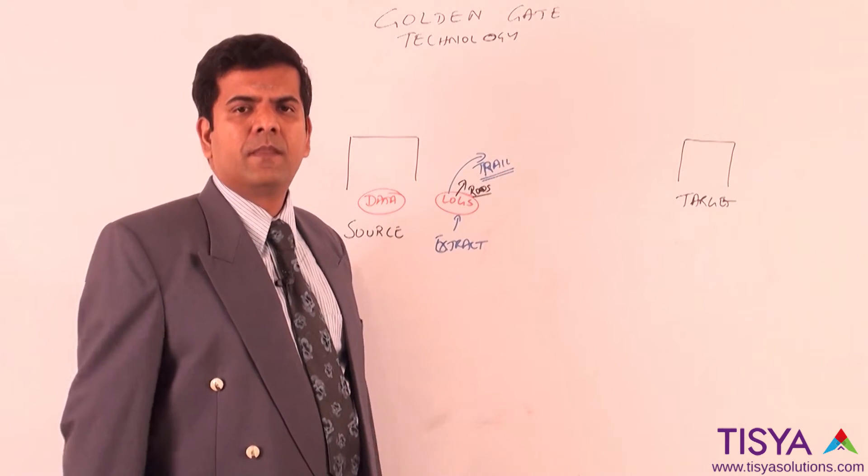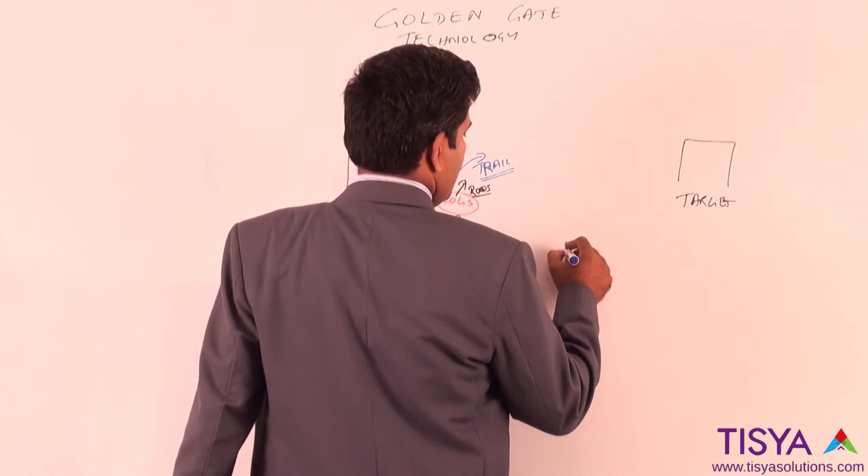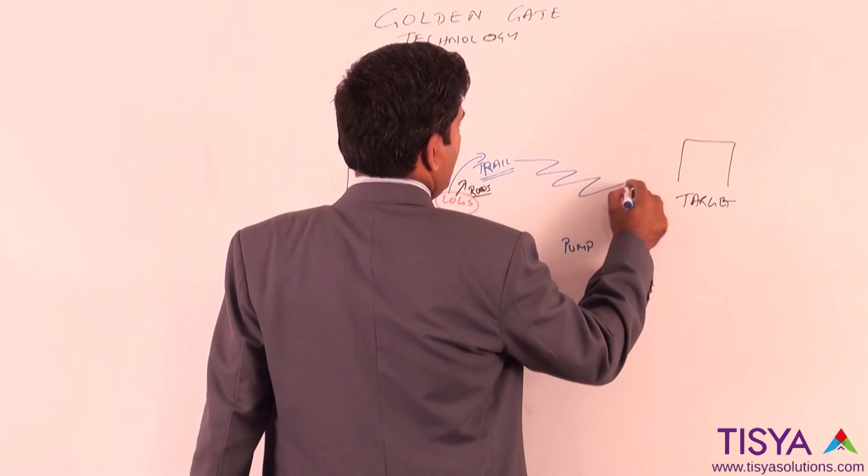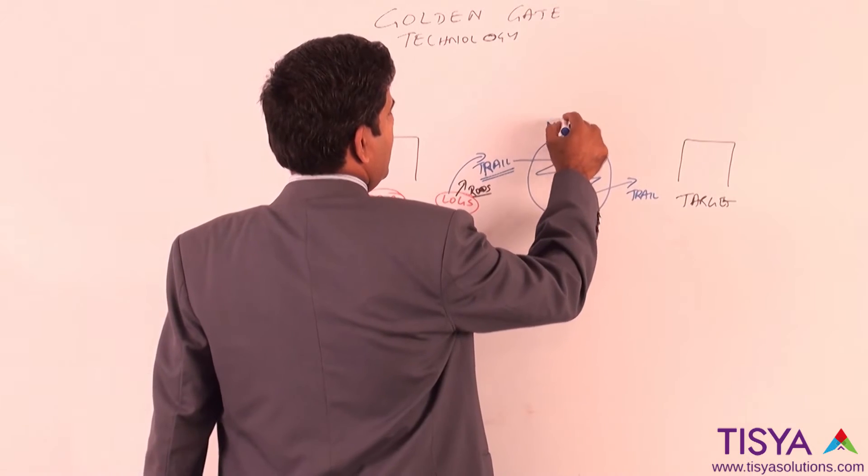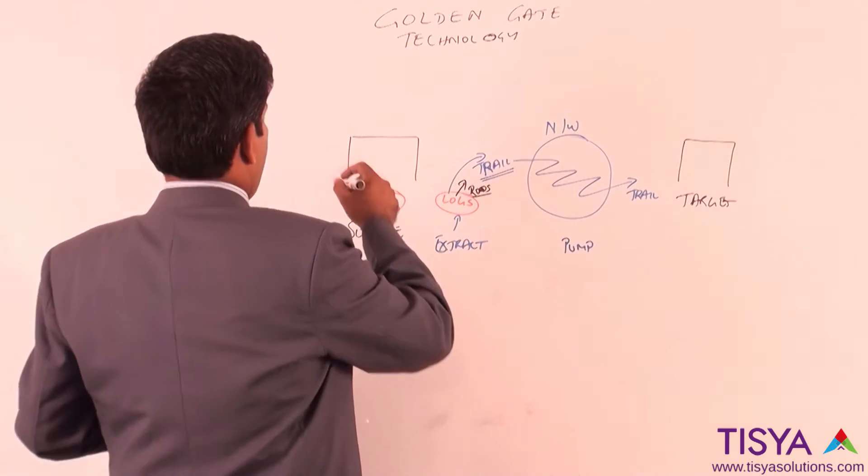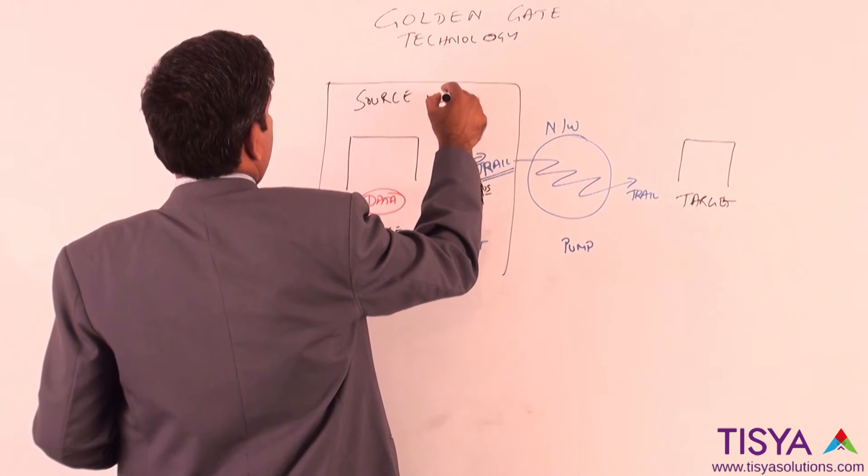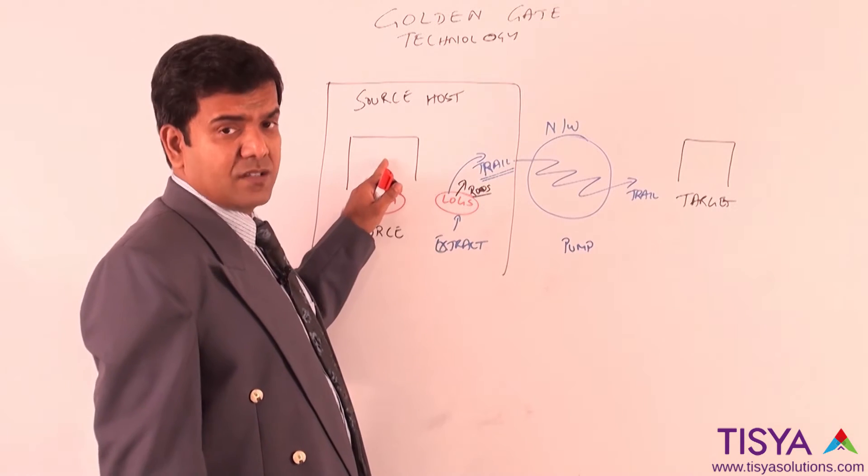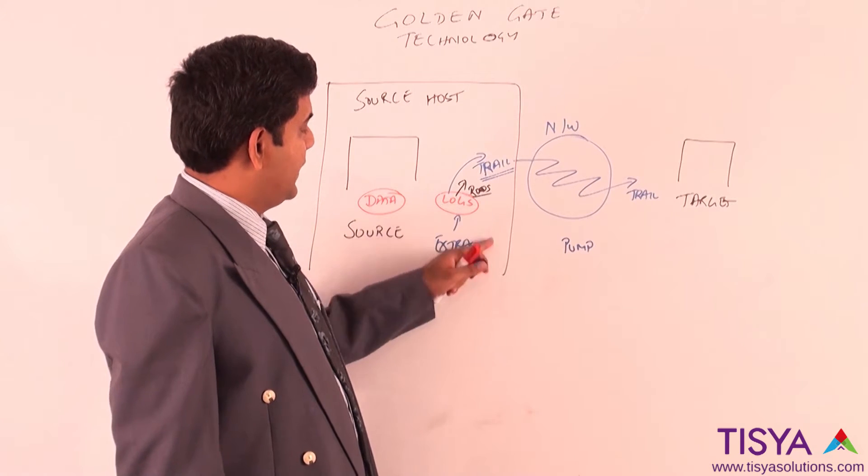Having written it to a trail, we can now use another technology called pump which can pump the data from this host. What we have here is the source host in which the database is there, the data is available with it, the logs are available with it and from inside the database host, source host is where the extract would be running.